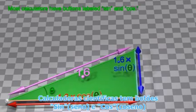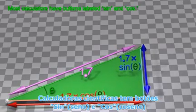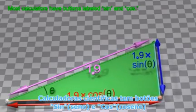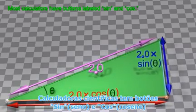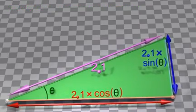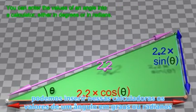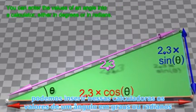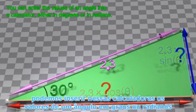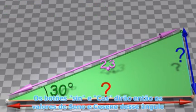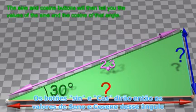Most calculators have buttons labeled sine and cosine. You can enter the values of an angle into a calculator, either in degrees or in radians. The sine and cosine buttons will then tell you the values of the sine and the cosine of that angle.